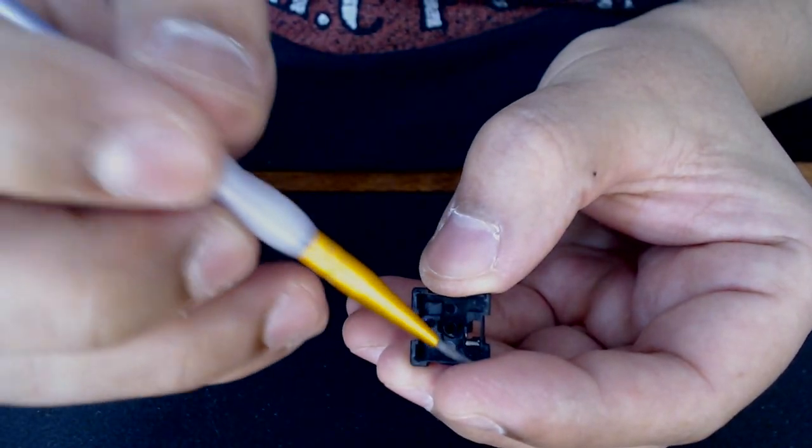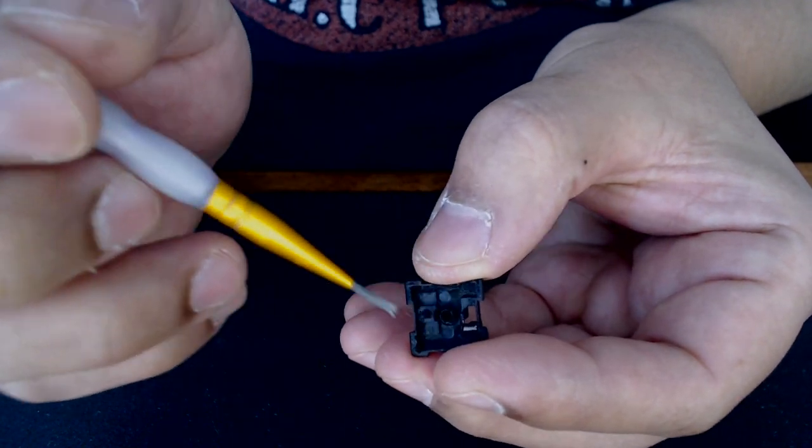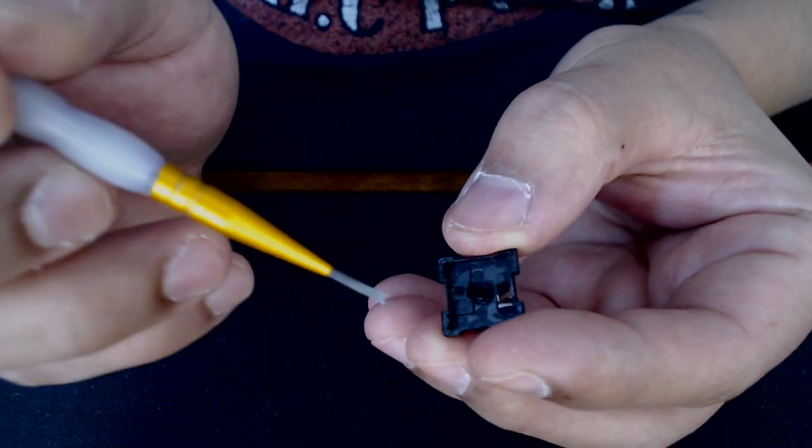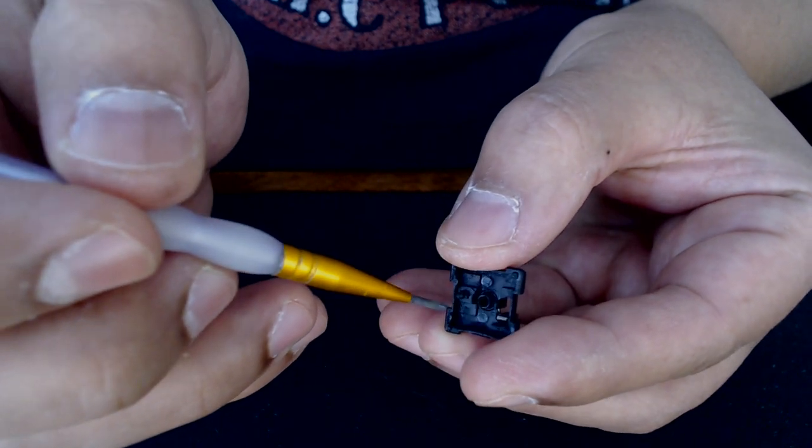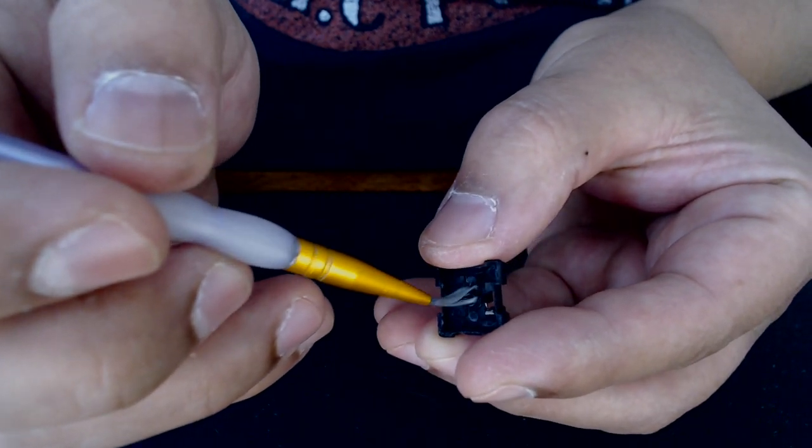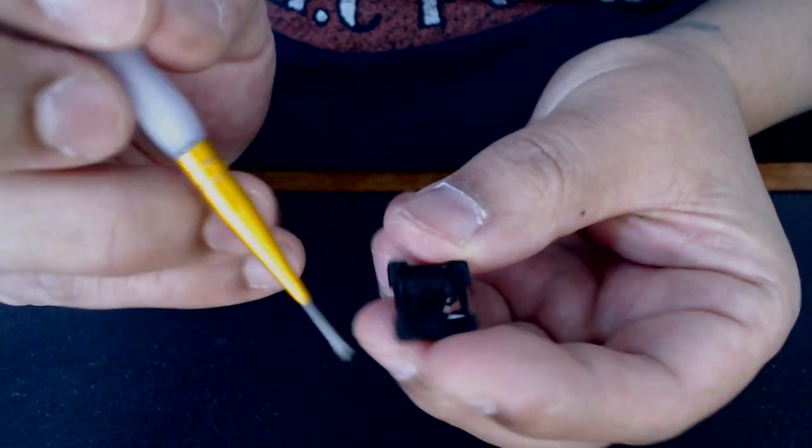So what I did is you get the bottom, you start, you dab and then you spread it until all the white lube goes away and it's just shiny. Then you want to go around the stem, where the stem is going to go in, and then a little bit inside. Make sure you don't have extra.